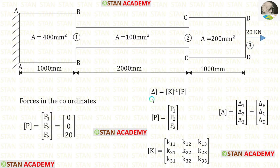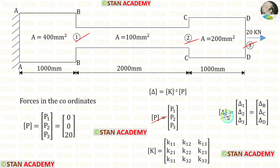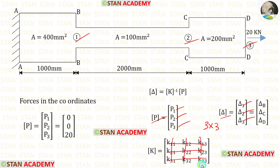Let us see the formula to find the displacements. The delta matrix is equal to the K matrix inverse multiplied by the P matrix. Since there are three coordinates, inside the P matrix and delta matrix we will have three values, and the size of the stiffness matrix will be 3×3 — that means three rows and three columns.